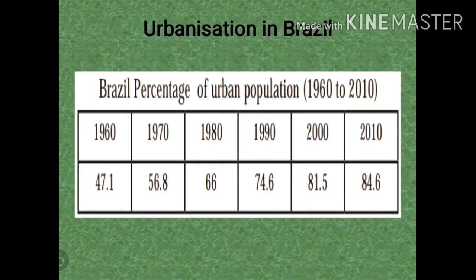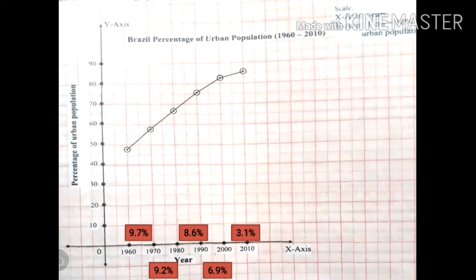Now let us discuss urbanization in Brazil. Given on textbook page number 48 is a table showing the growth and share of urban population in the total population of Brazil. You have to look at the table, draw a line graph from this data, and then examine the graph carefully to answer the questions given on page number 49.